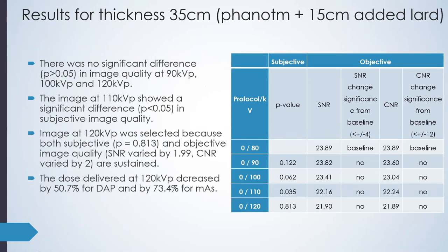For the last thickness at 35 centimeters, there was no significant difference between the reference image and images taken at 90, 100, and 120 KVP. The image at 110 KVP showed a significant difference in subjective image quality and was therefore excluded. The image at 120 KVP sustained both objective and subjective image quality, and the dose was reduced by 50.7% for DAP and 73.4% for MAS.